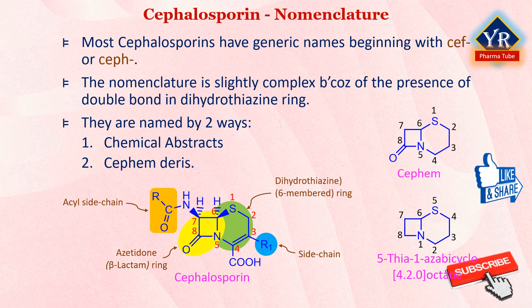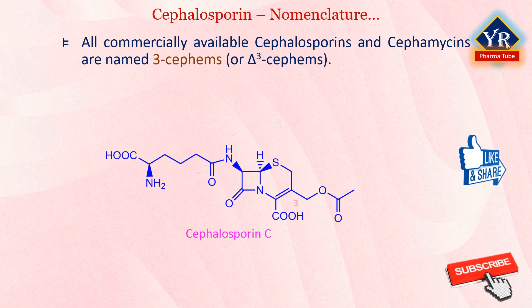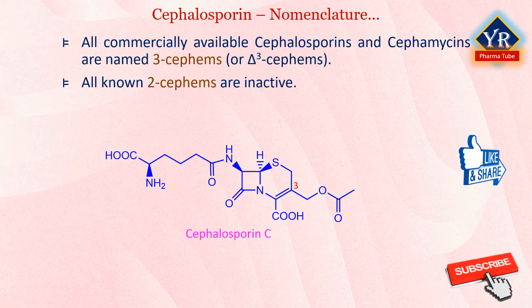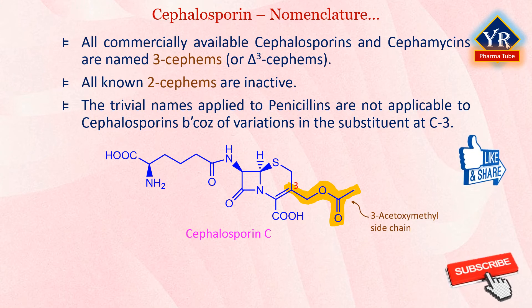Cepham is the name given to the unsubstituted saturated bicyclic ring system with the lactam carbonyl oxygen. According to this system, all commercially available cephalosporins and cephamycins are named 3-Cephams or delta-3 Cephams to designate the position of the double bond. Interestingly, all known 2-Cephams are inactive, presumably because the beta-lactam lacks the necessary ring strain to react sufficiently. The trivialized forms of nomenclature applied to the penicillins are not consistently applicable to the naming of the cephalosporins because of the variations in the substituent at position 3. Thus, although some cephalosporins are named as derivatives of cephalosporanic acids, this practice applies only to derivatives that have a 3-acetoxymethyl group.